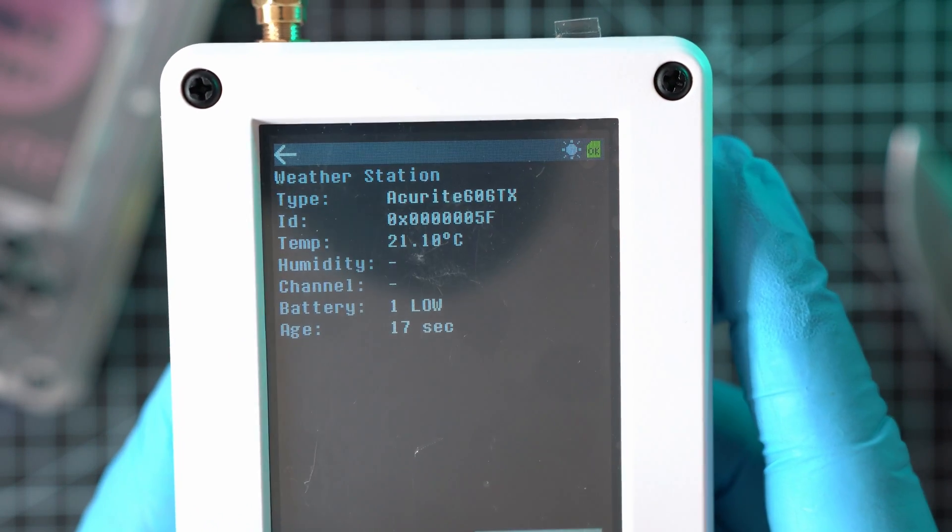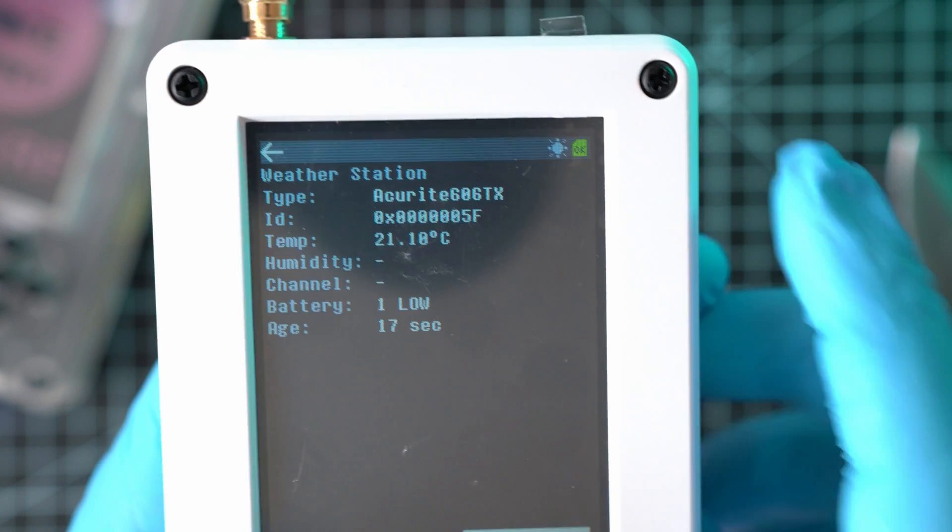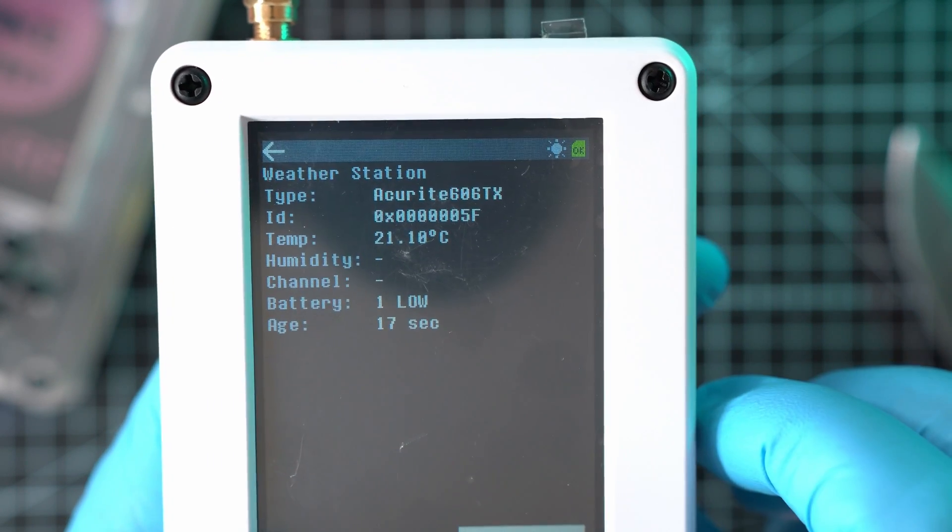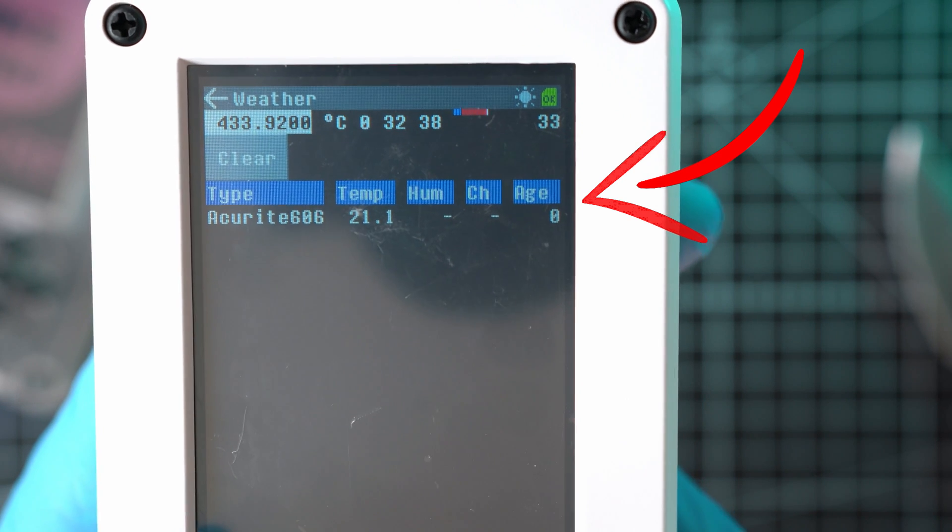Let's click on it and here we have a few more details such as ID and battery status. Let's go back and this sensor just transmitted again.